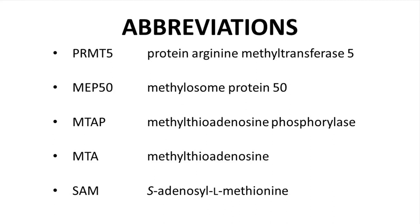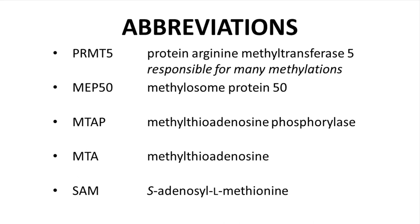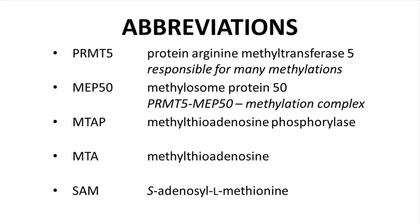As with almost any drug discovery program, there are many abbreviations. Let's describe the main ones here. PRMT5 stands for protein arginine methyltransferase-5. This is a protein in cells that mediates many key methylation reactions. MEP50 is methylosome protein 50, which forms an active methylation complex with PRMT5. MTA-P is methyl thioadenosine phosphorylase.